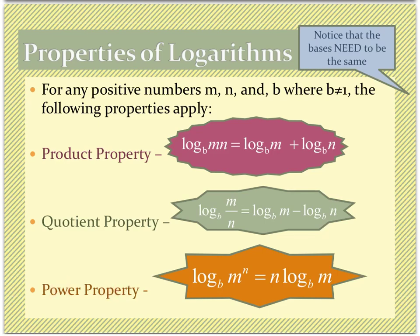The power property says that any time I have a log base B of M to some N power, I'm allowed to bring that exponent to the front of the log. So that N exponent comes out of the exponent position and comes to the front of the log.